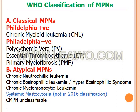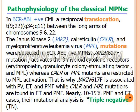The atypical myeloproliferative neoplasms include chronic neutrophilic leukemia, chronic eosinophilic leukemia, hypereosinophilic syndrome, chronic myelomonocytic leukemia, systemic mastocytosis, and chronic myeloproliferative neoplasms unclassifiable. In 2016, systemic mastocytosis is no longer considered a myeloproliferative neoplasm.